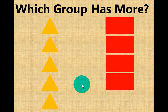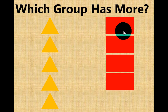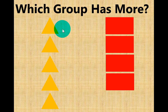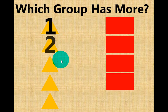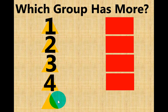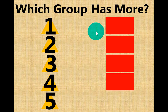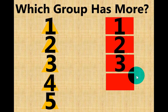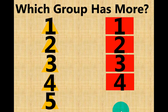Which group has more — the orange triangles or the red rectangles? Let's count. One, two, three, four. One, two, three, four — four red rectangles. Which group has more?